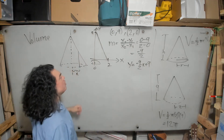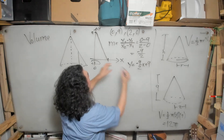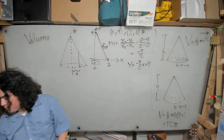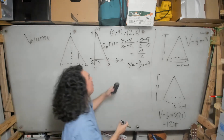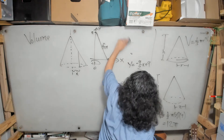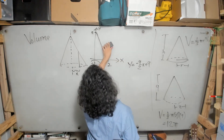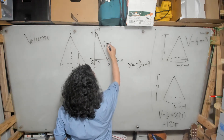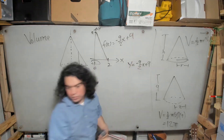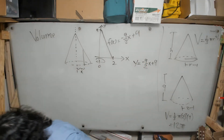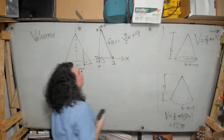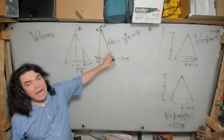So this is our f(x). I'll erase that construction work, but I wanted to show you how to derive it. So f(x) = −9/2 · x + 9.